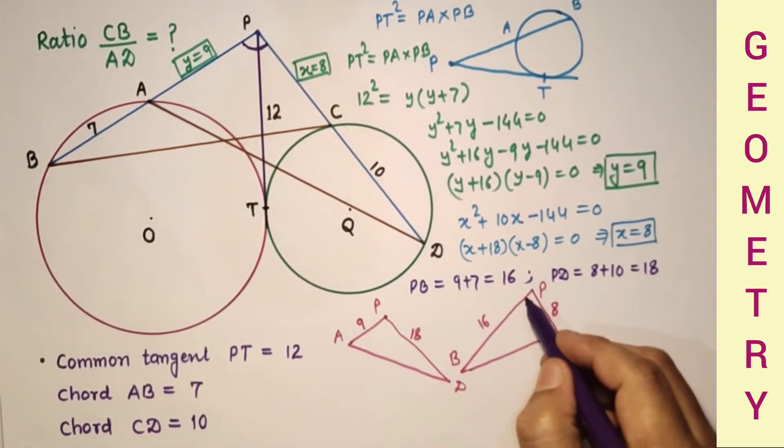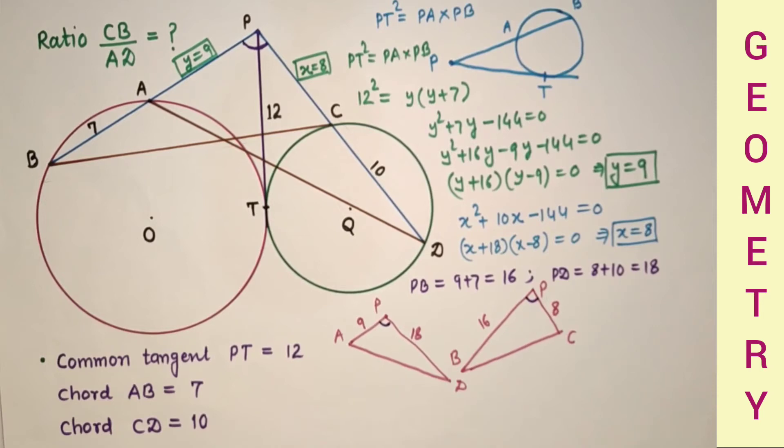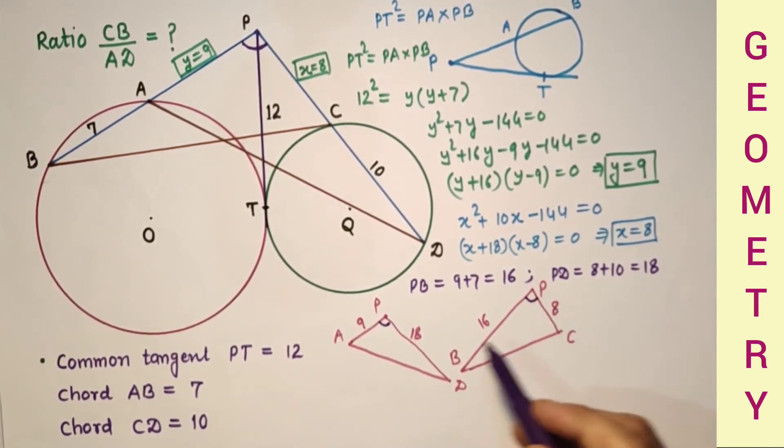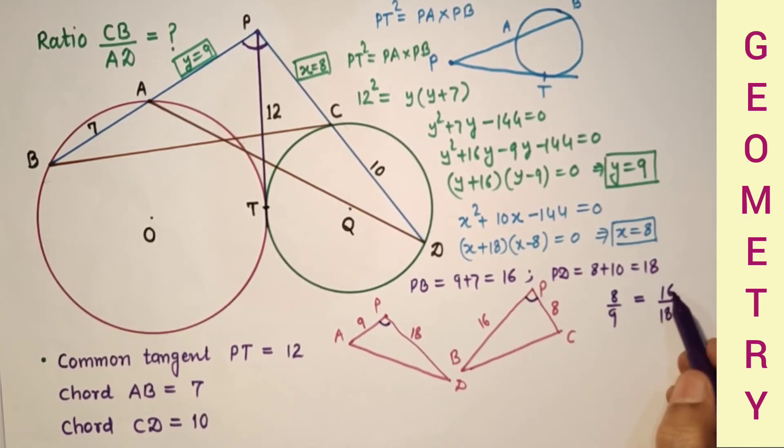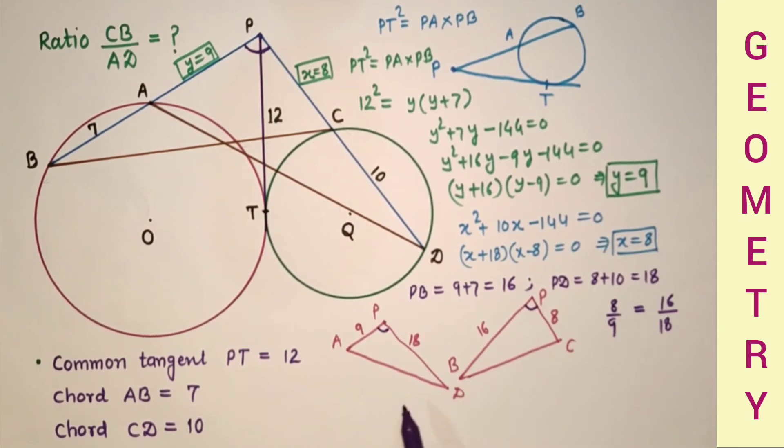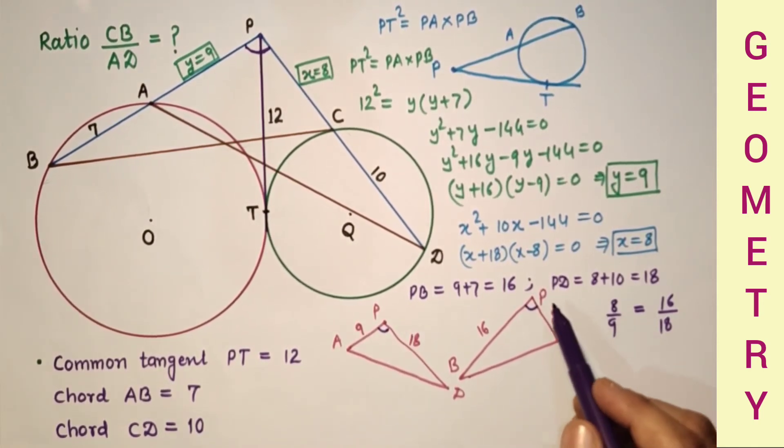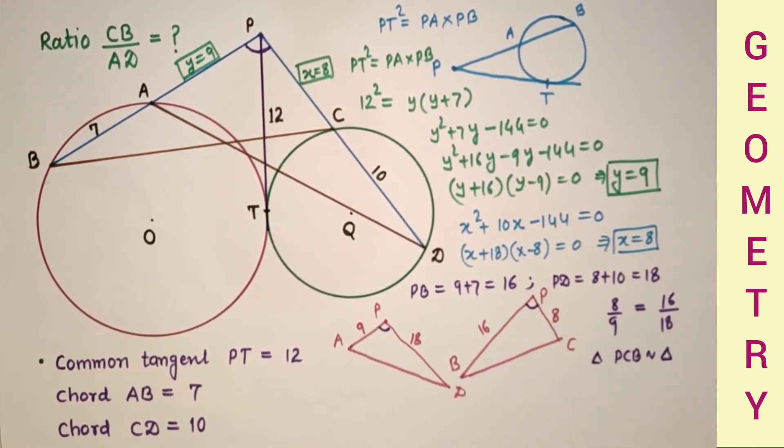These two angles are equal, and PC by PA is equal to 8 by 9, which is equal to PB by PD, which is 16 by 18. If we cancel it by 2, so 8 by 9. So therefore PC by PA is equal to PB by PD and this angle is common. So by SAS test, these two triangles are similar. So triangle PCB is similar to triangle PAD.